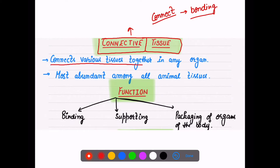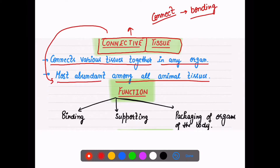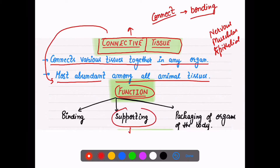Connective tissue in our body connects and binds various tissues together in any organ. Another important point about connective tissue is that it is the most abundant tissue among all the animal tissues. We have to discuss nervous tissue and muscular tissue; we have already discussed epithelial. Out of all these tissues, the most abundant is the connective tissue. If we talk about its function, it supports the organ.